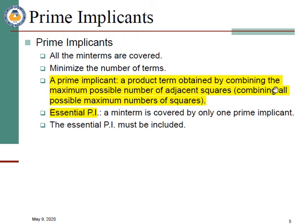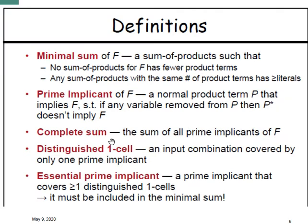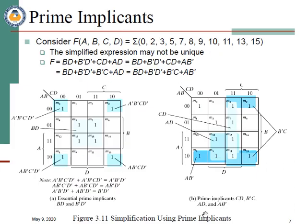An essential prime implicant is a prime implicant that covers at least one distinguished cell — a one cell that is not part of any other group. That cell is called a distinguished one, and the prime implicant covering it is called an essential prime implicant. Let's see with the help of an example. Here, the prime implicant is the largest group; these are all prime implicants.